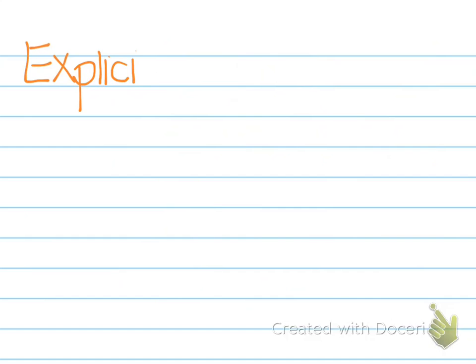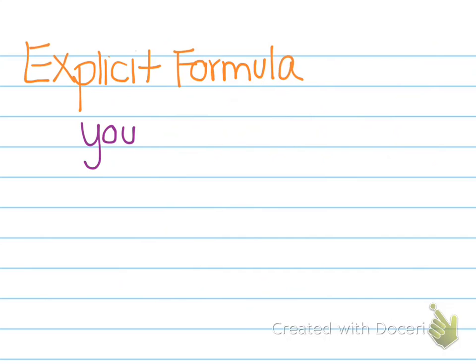Let's say there was a sequence of numbers but you wanted to know the value of the 100th term. You are not going to add 5 one hundred times to find that value. We are going to use what we call an explicit formula. The point of an explicit formula is to help you find the value of any term.